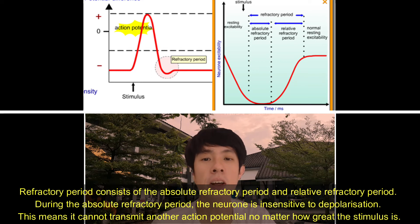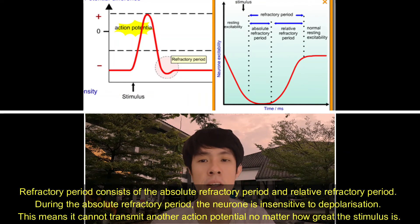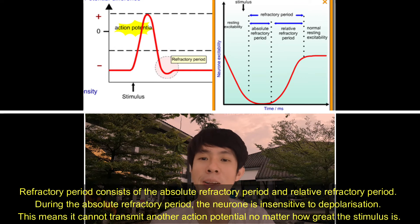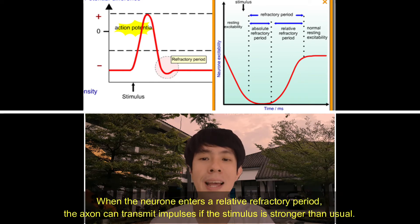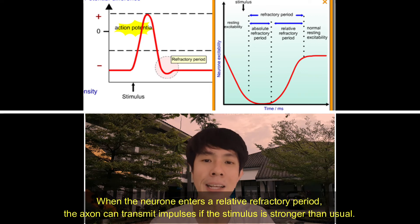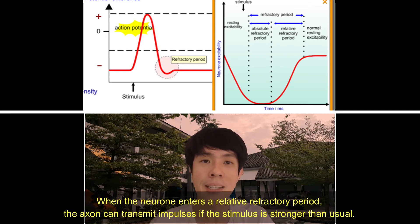The refractory period consists of the absolute refractory period and the relative refractory period. During the absolute refractory period, the neuron is insensitive to depolarisation — it cannot transmit another action potential, no matter how great the stimulus is. When the neuron enters a relative refractory period, the axon can transmit impulses if the stimulus is stronger than usual.